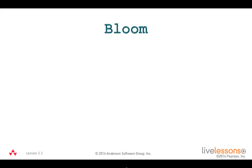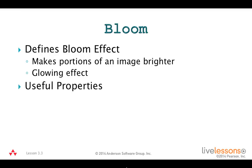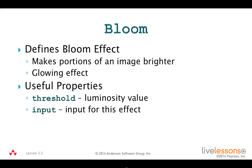The next effect is Bloom. This effect makes portions of an image brighter above a given threshold, and it's also useful as a glowing effect. The Threshold property is the luminosity value of a pixel — a measure of how bright the pixel looks to the human eye. The range is 0 to 1 with a default of 0.3. A value of 0 means all pixels glow, and a maximum value of 1 means no pixels are glowing. The other property is input, which is used for chaining effects.